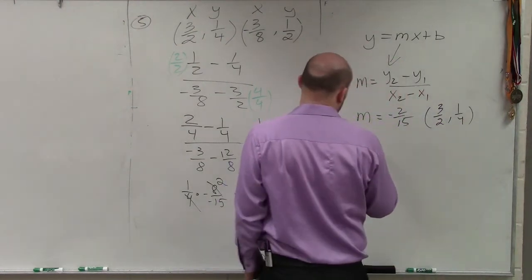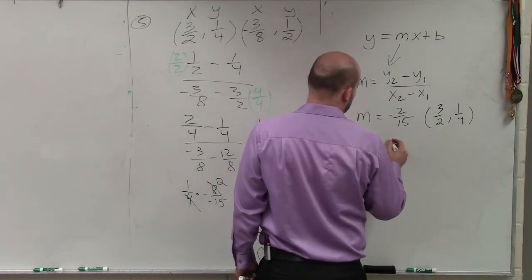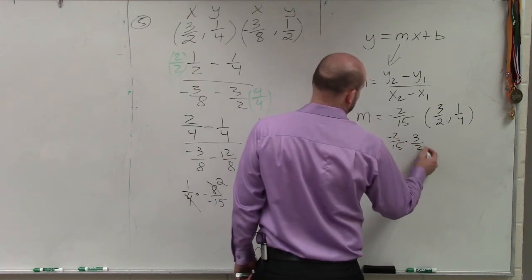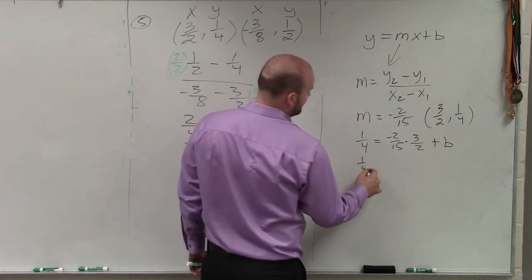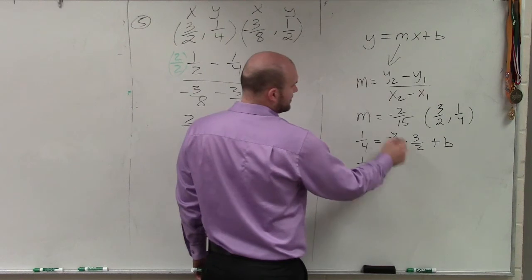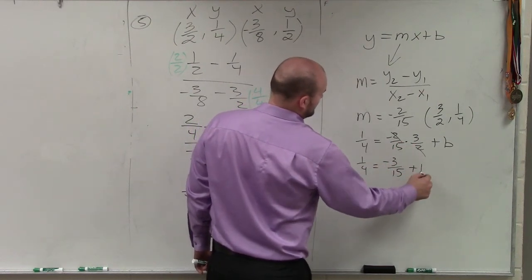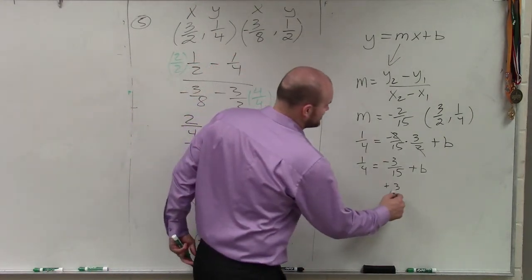So now I take y, which will be 1 fourth, is equal to negative 2 fifteenths times 3 halves plus b. Now I multiply across. So I have 1 fourth equals here that I can divide out. So negative 3 fifteenths plus b. Then again, to solve, I'll add 3 fifteenths.